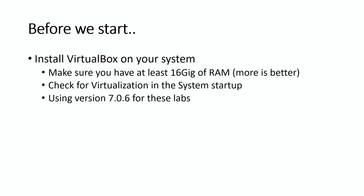The best place to start is talking about what we actually need to do here. I've got a little presentation set up. Before we even get started on this, there's a couple of things that need to be done. Number one, you need to install VirtualBox on your system. Make sure you have at least 16 gigs of RAM — more is better. Make sure virtualization is enabled in the system startup. For these demos, we're going to be using VirtualBox version 7.0.6.